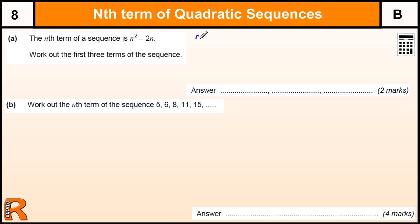So, the first term is when n equals 1. When n is 1, n squared is 1 minus 2 lots of 1, which is 2. So the first term is minus 1.